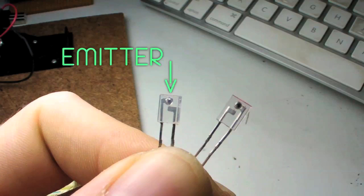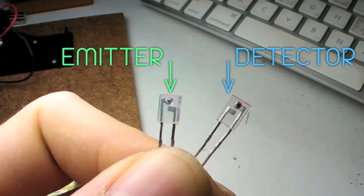The emitter is actually just an infrared LED designed to be used with its matching infrared phototransistor, the detector.